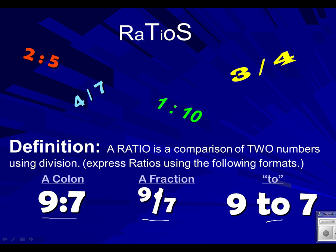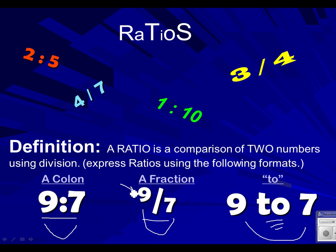So whether it's written with a colon, as a fraction, or using the word 'to,' it's all the same — nine to seven, nine to seven, nine to seven. Some of the mistakes we make with ratios, especially when it's written like a fraction, is we might be tempted to say 'nine-sevenths,' but that wouldn't be the correct way to recite a ratio. You say it as nine to seven.